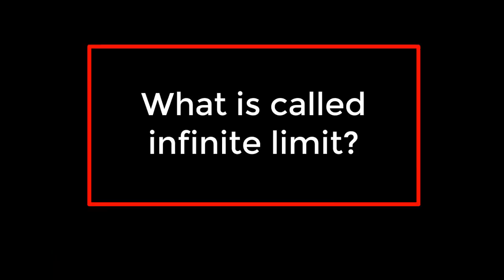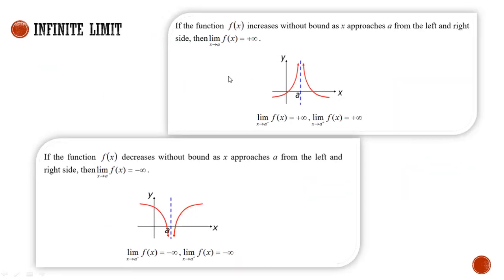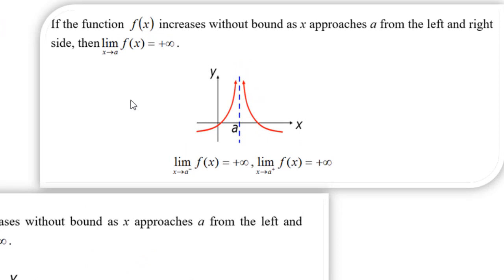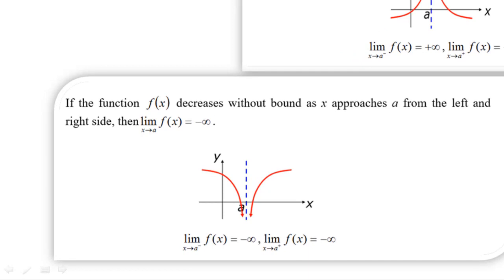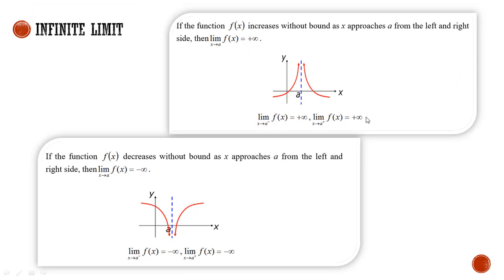What is called infinite limit? Infinite limit can be denoted as positive infinity or negative infinity. How do we make the differences between them? When the function increases without bound or decreases without bound when the x approaches a from the left and right, when it's decreased, we will call it negative infinity. When it is increased without bound, it will be denoted as a positive infinity.